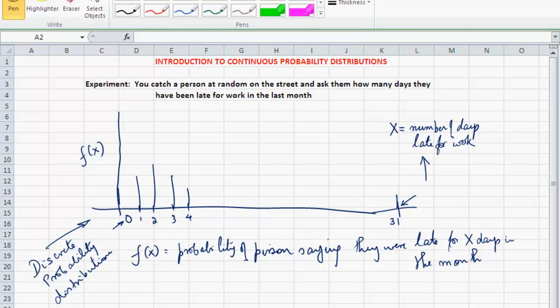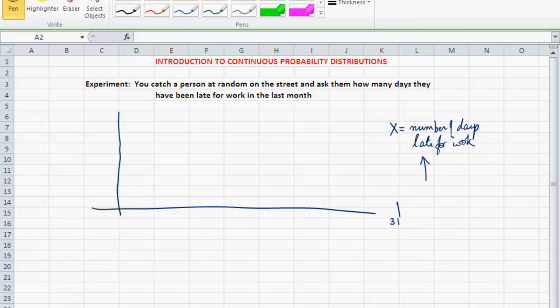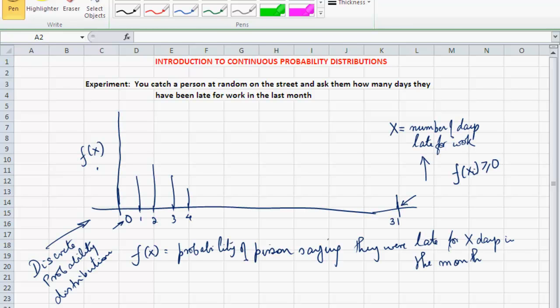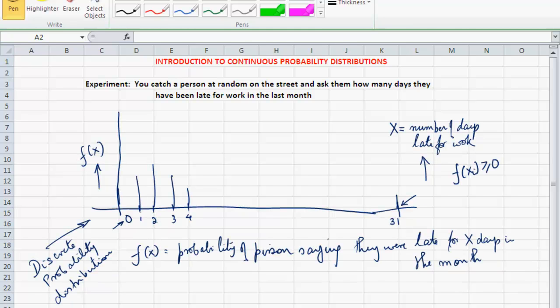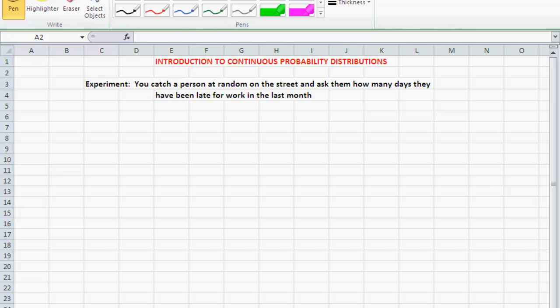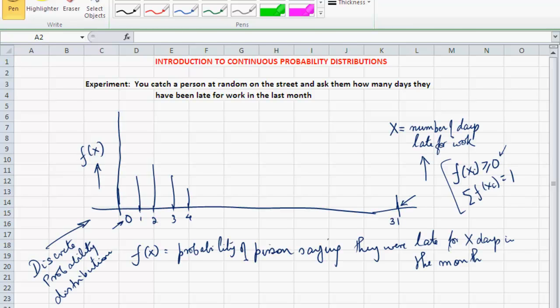You remember two basic properties that any discrete distribution had to obey. One is that the spikes must be non-negative. So every spike, the y-axis f of x, this is simply the probability of outcome x and x is an integer. So one of the properties was that each spike had to be non-negative. So every fx has to be greater than or equal to 0. The other one was that the sum of all the spikes must equal 1. And that followed from the concept of a sample space. If I can enumerate all the possible outcomes from the experiment, then the sum of the likelihoods of all those outcomes must add up to 1. These are two basic properties for a discrete probability distribution.